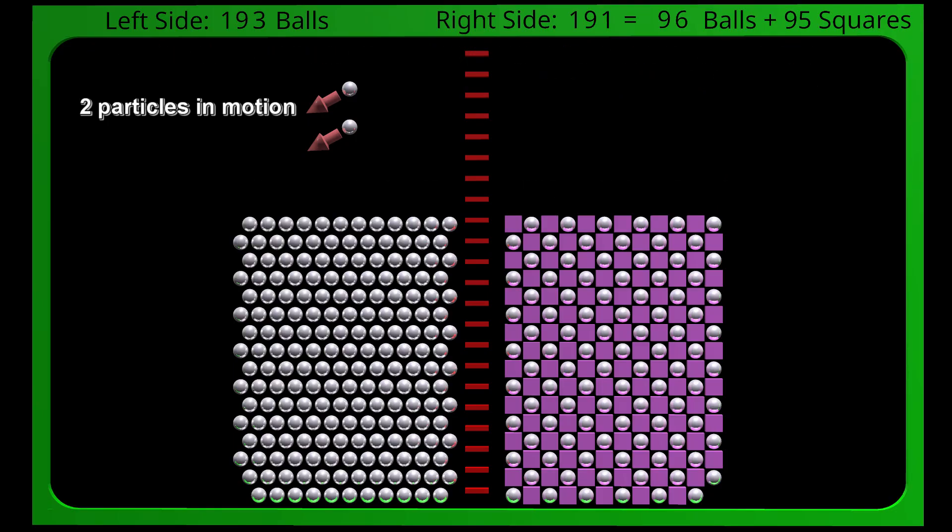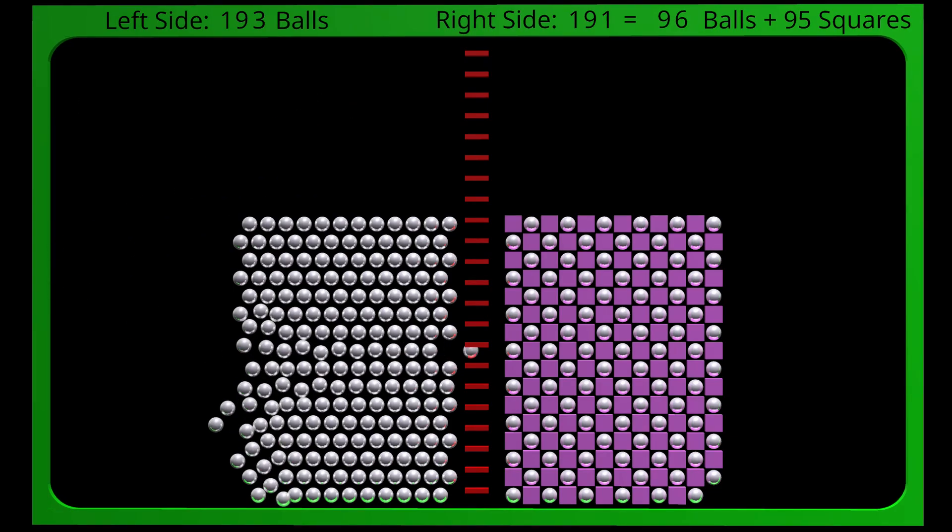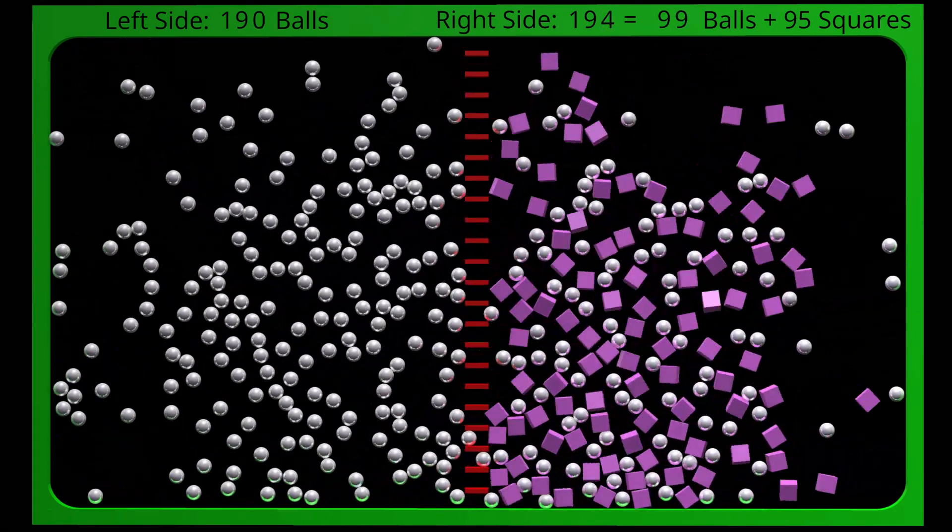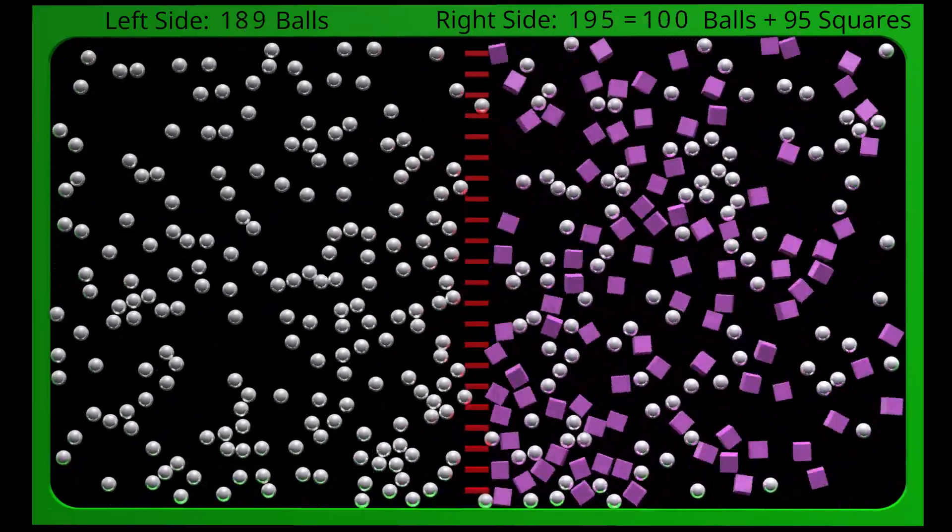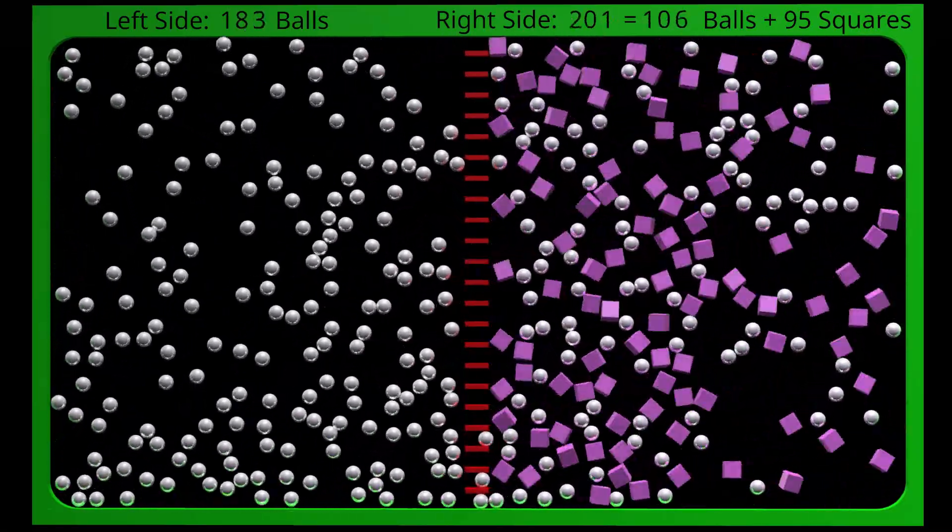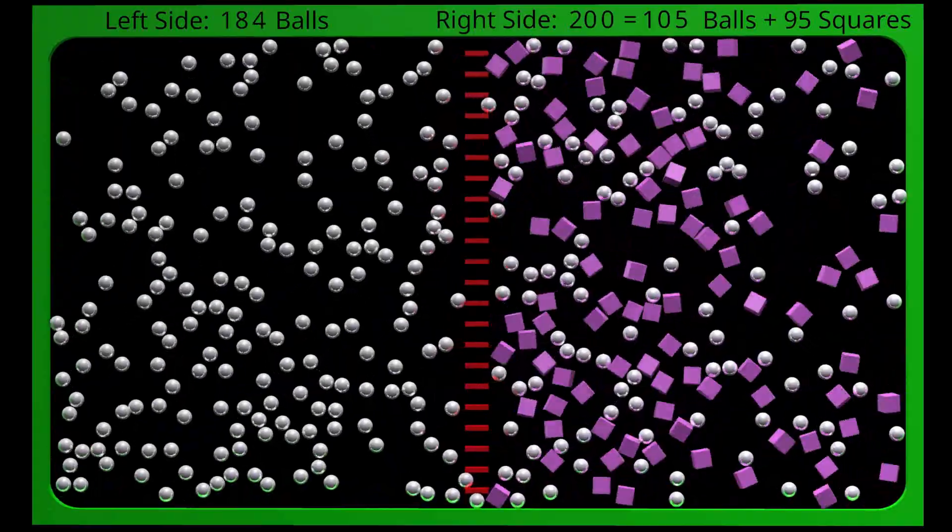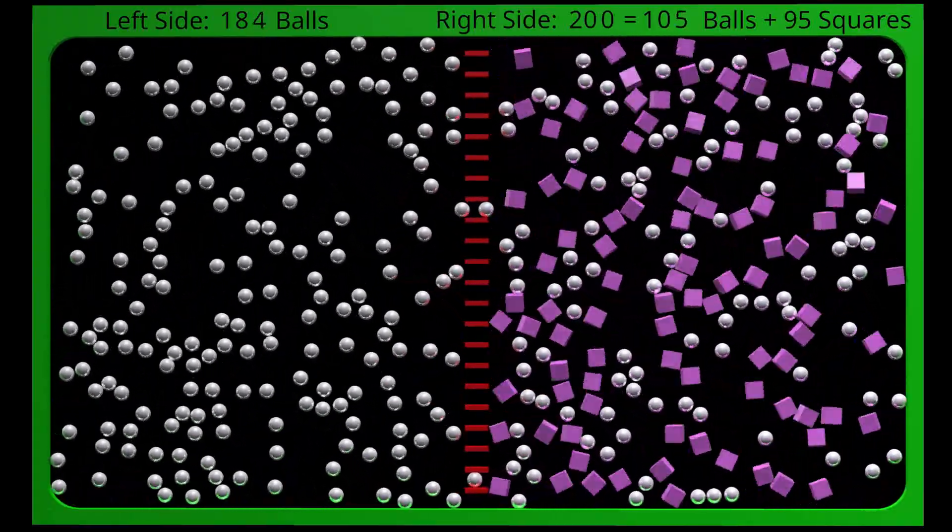There is a net flow of balls from the left side to the right side. As before, the balls are able to pass through the barriers, but the squares are not.